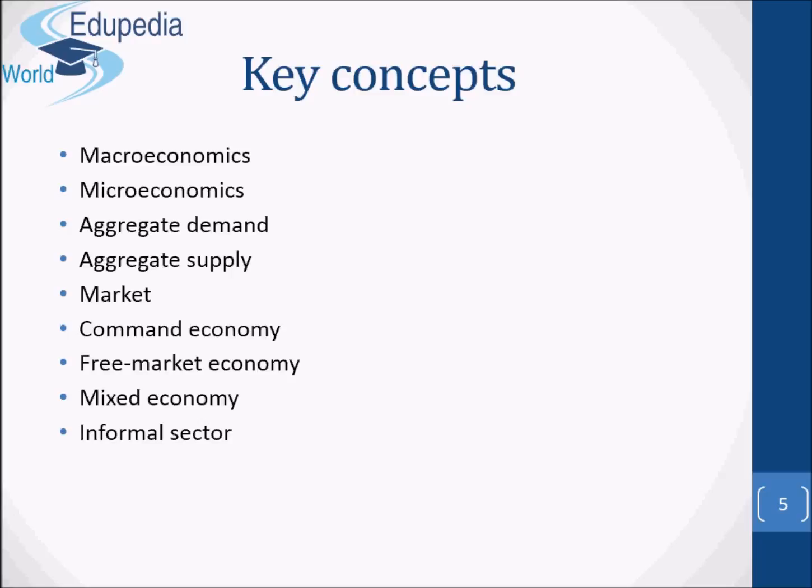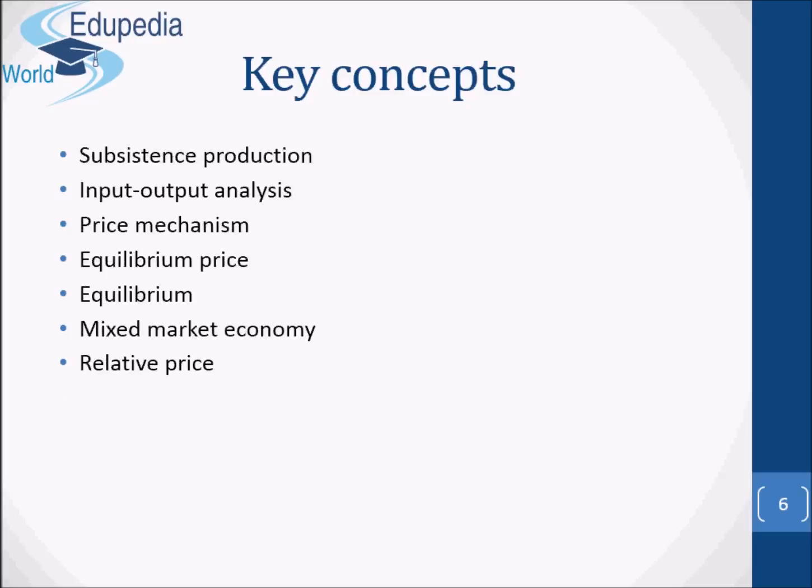Finally, we saw the mixed economy, which is an economy where economic decisions are made partly by the government and partly through the market. In practice, all economies are mixed. We also saw the informal sector, which is the part of the economy that involves production and/or exchange where there are no money payments. We also talked about subsistence production, where people produce things for their own consumption.